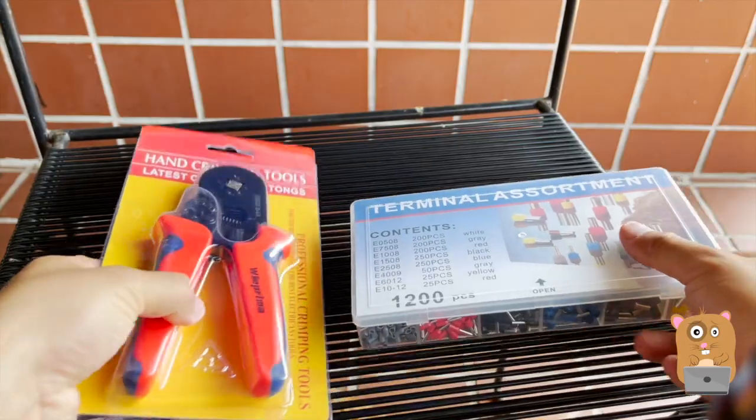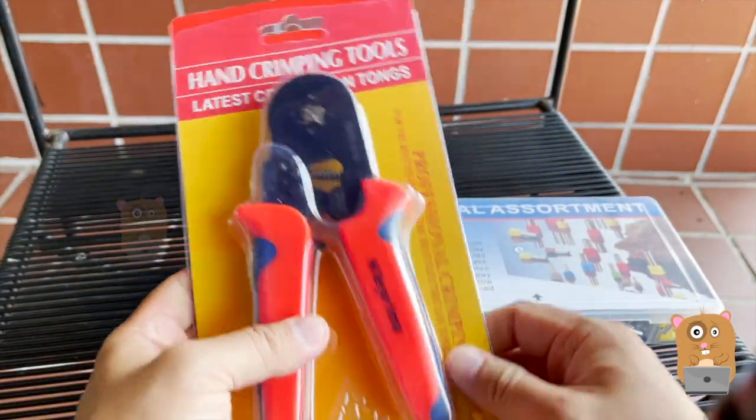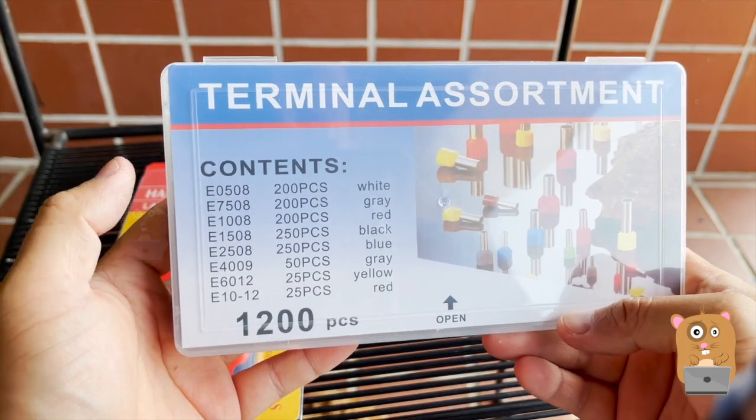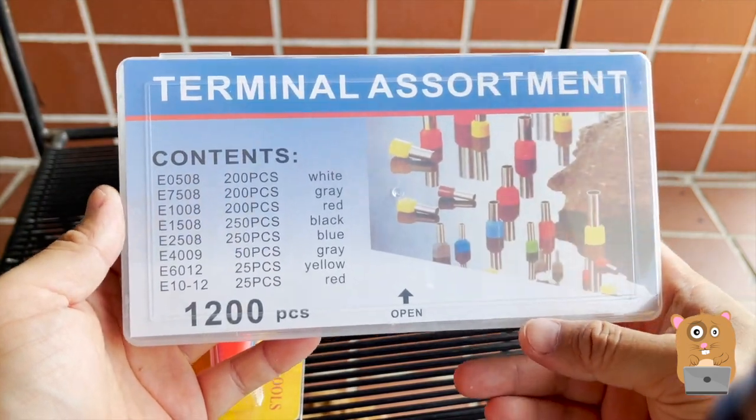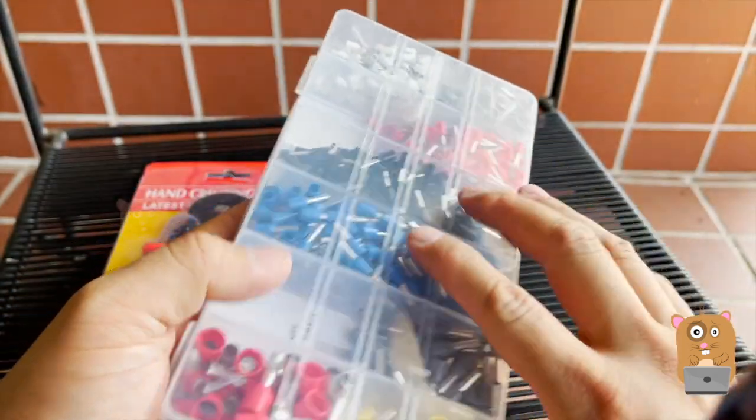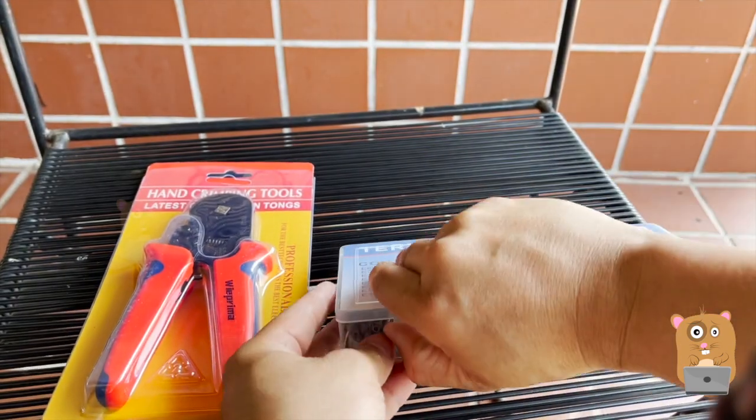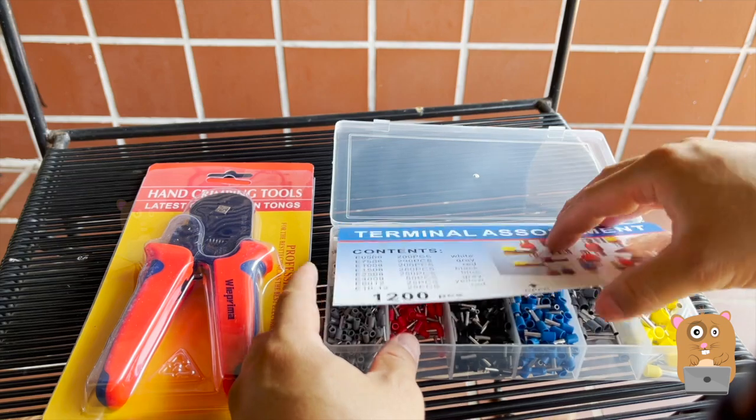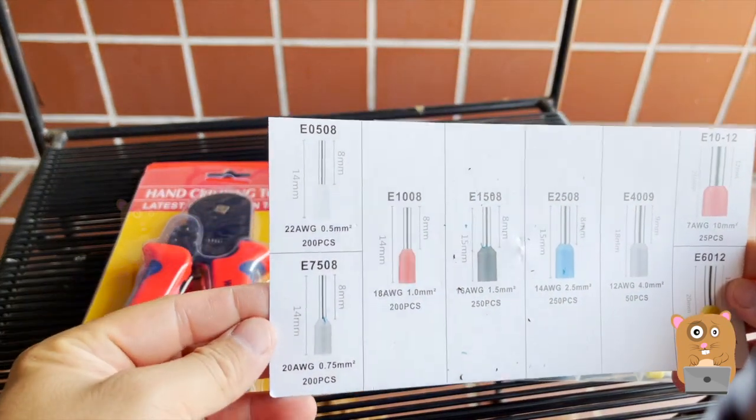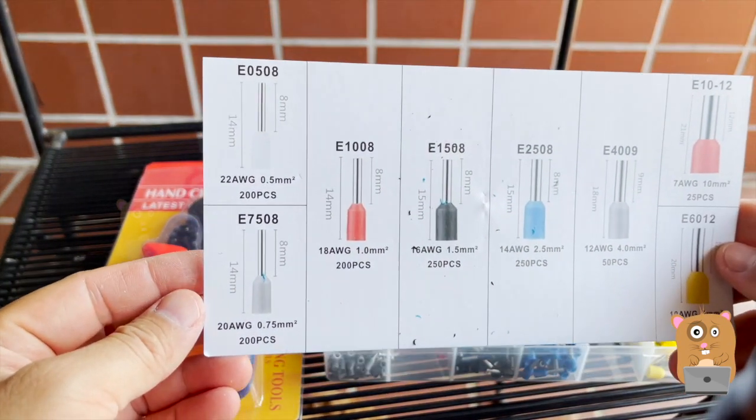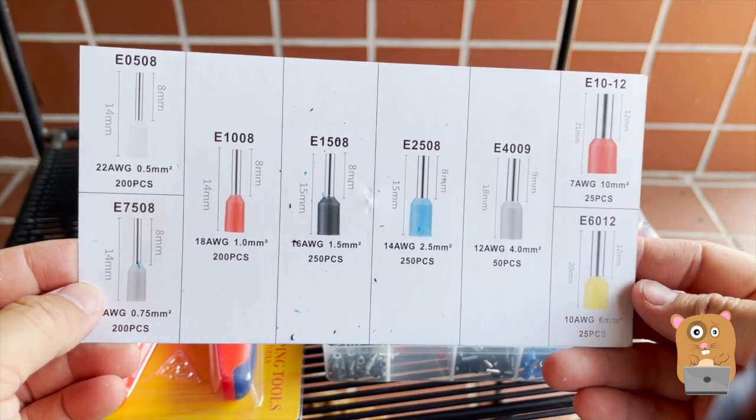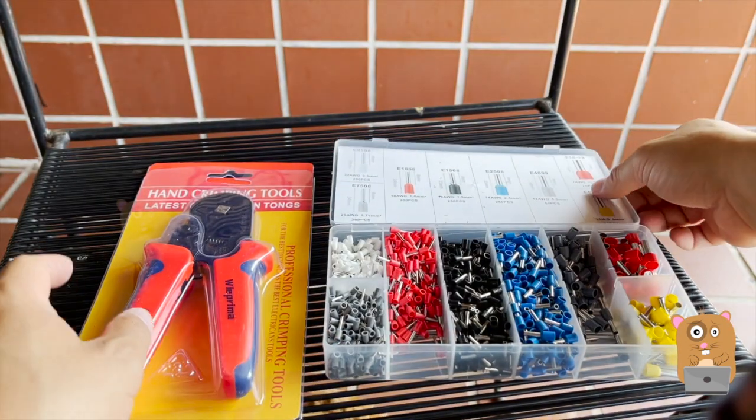Inside it came with the hand clipping tool and a wide variety of terminals. 1,200 pieces total. It's got about everything I'll need for home use. And let's put that to the side.